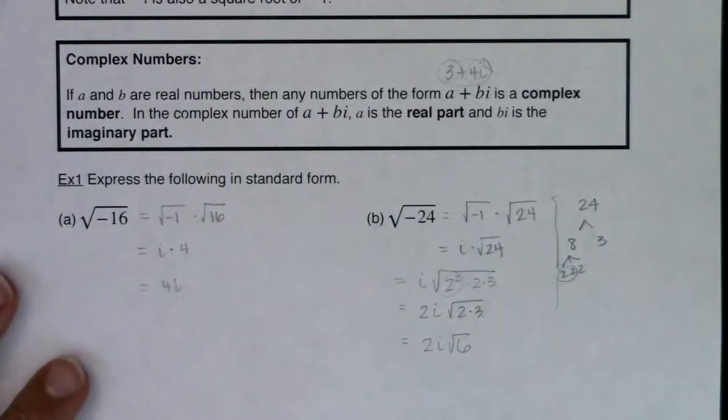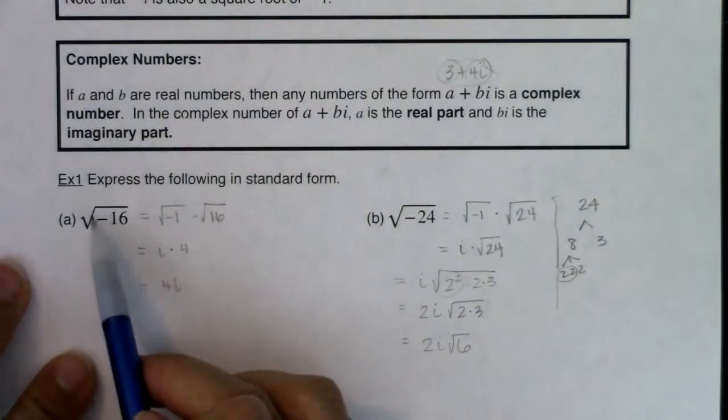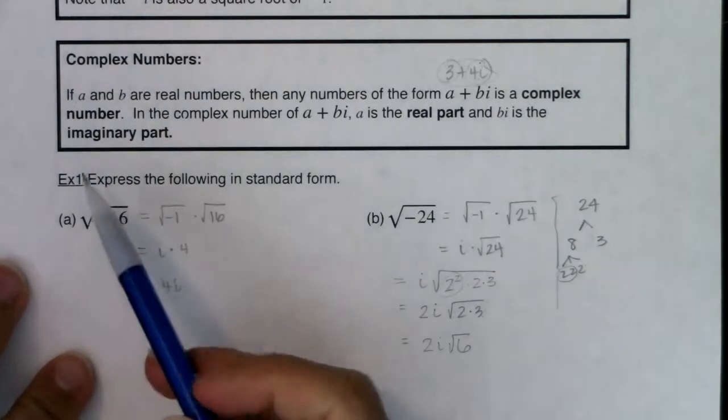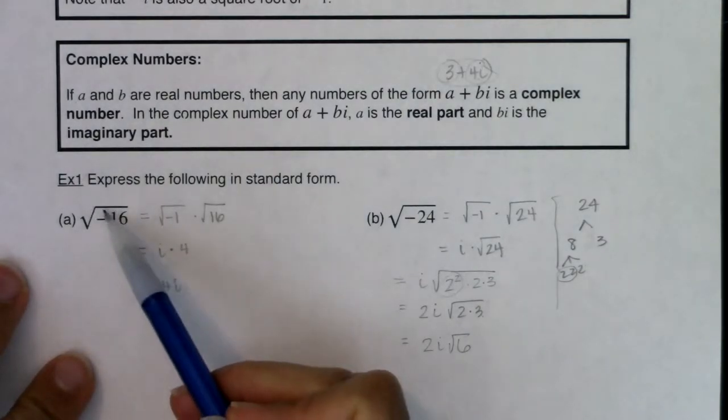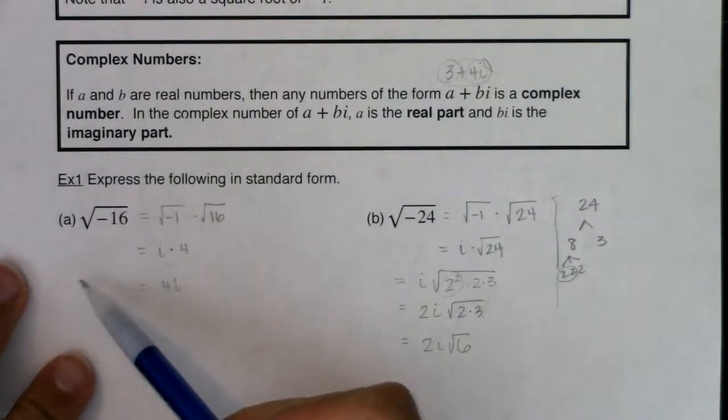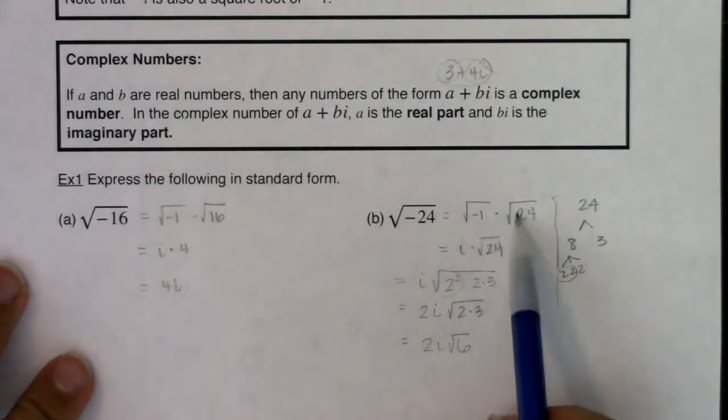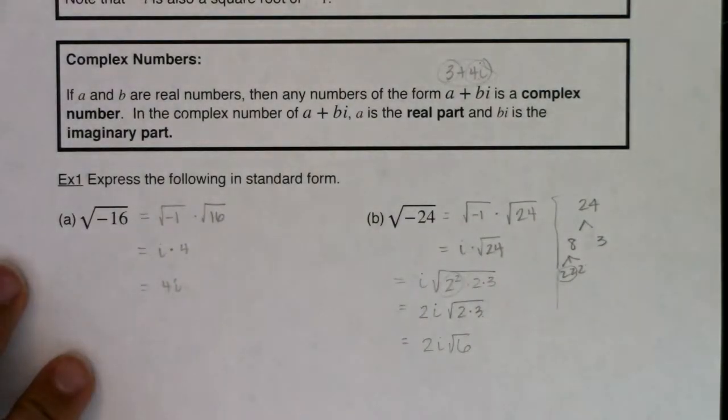All right. So how this works, again, if you have the square root of a negative number or any even index to a negative number, take the imaginary part out first and then apply all of your radical rules as you would have in any previous math class. All right. So with that, we're going to flip the page and we're going to practice this a little bit more. See you in a few. Bye.